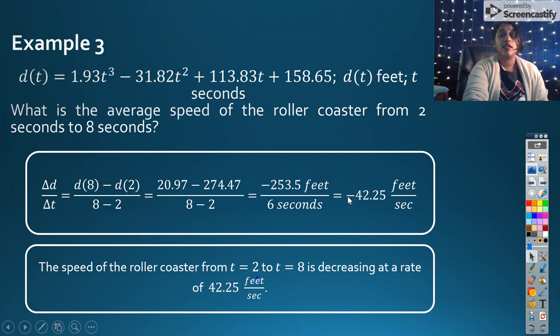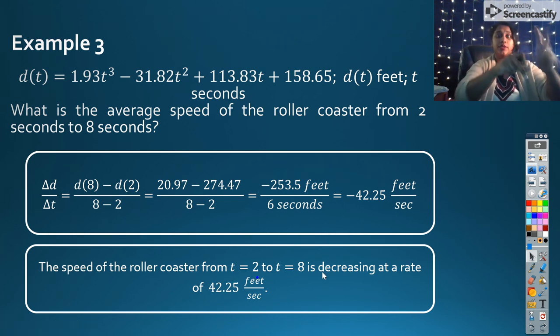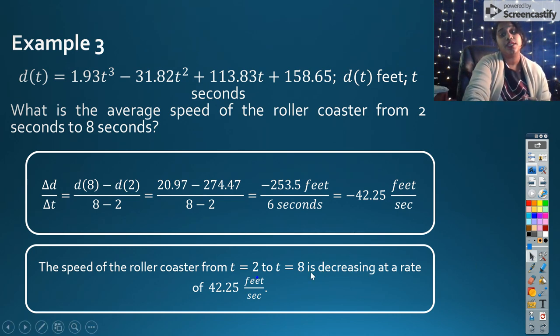Important little note. This is negative 42.25. I could have written it as equal to negative, I could put the average speed as negative. But the real interpretation is that it is decreasing, which is what I wrote, decreasing at a rate of 42.25.